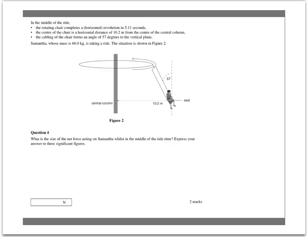So, here's an example question. Here is a theme park ride where you have circular motion at an angle, the angle is 57 degrees to the vertical here, and using similar triangles we can see that that angle in there will also be 57 degrees.